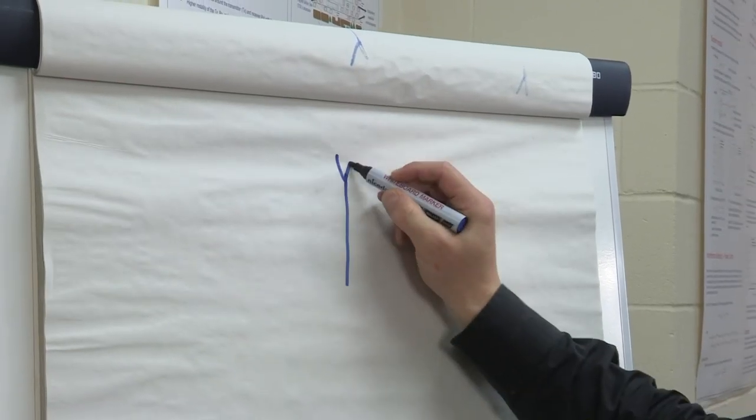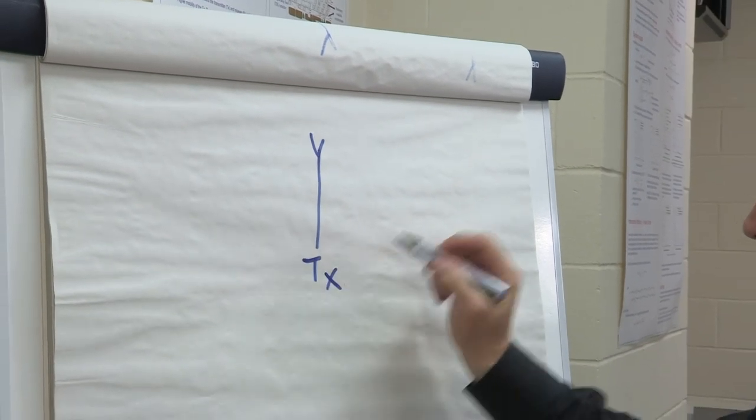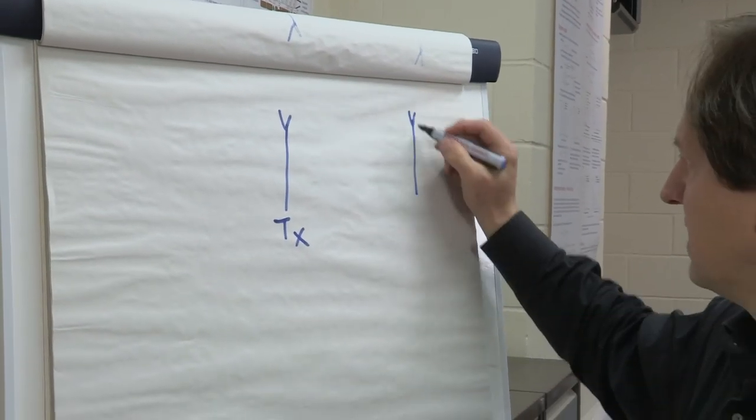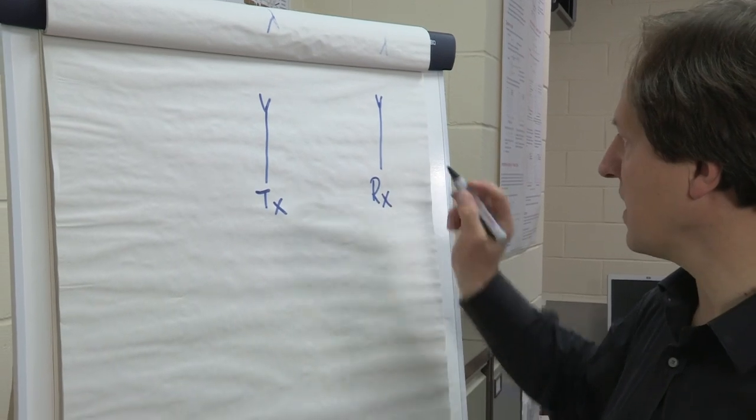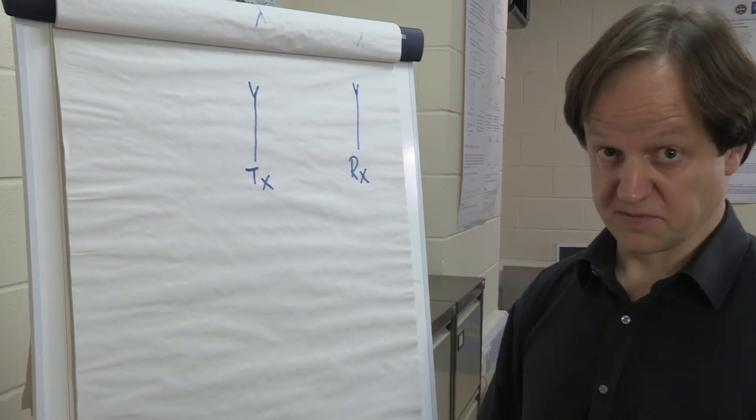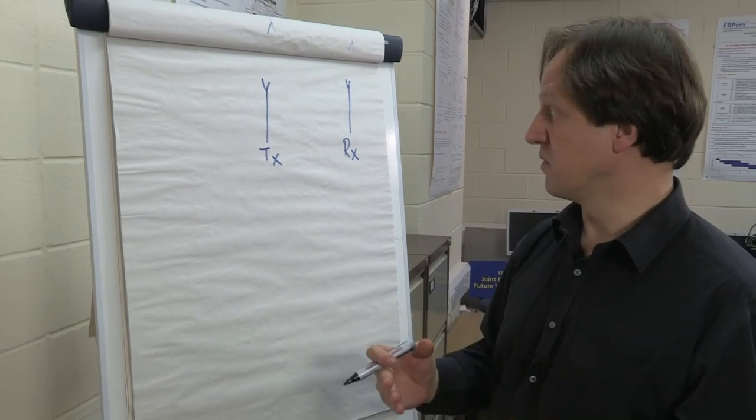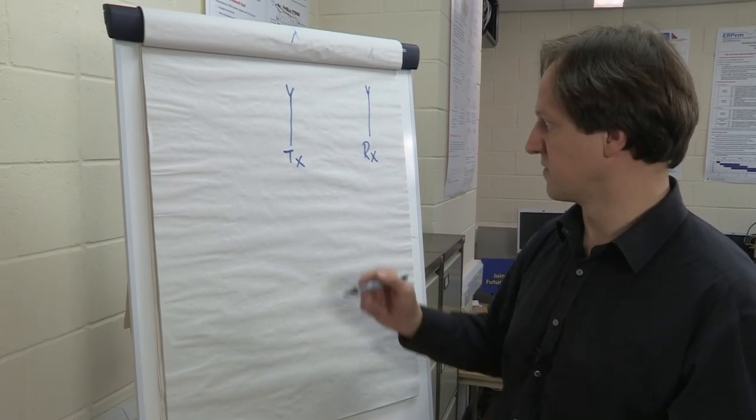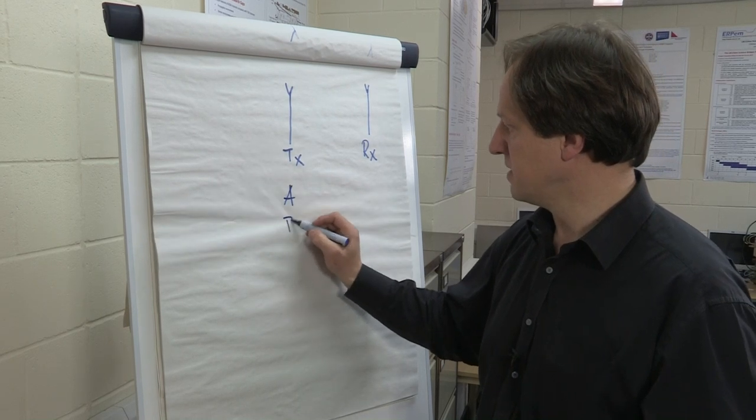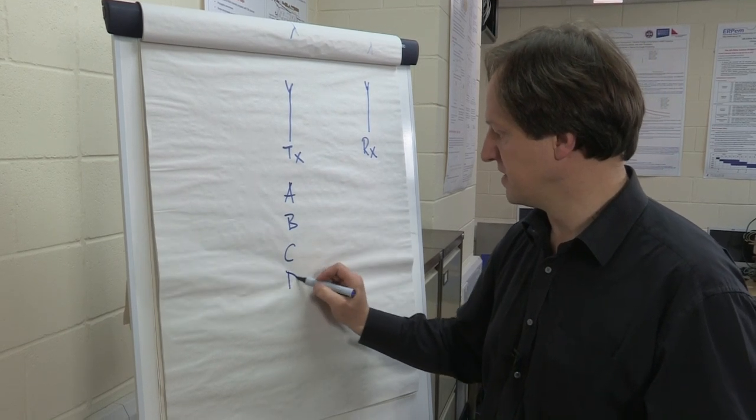For mobile communications, we require a transmit antenna and we would require a receive antenna. This would define the transmission link. And obviously, we want to transmit information. Let's assume we want to transmit the first four letters of the alphabet: A, B, C, D.